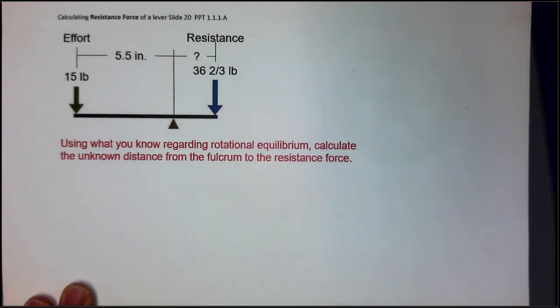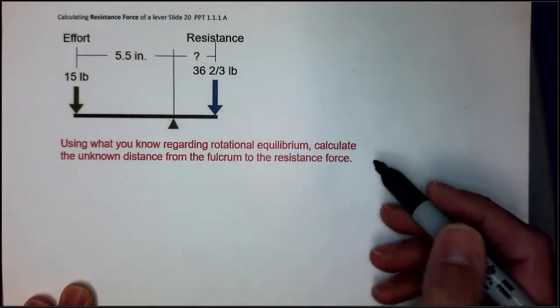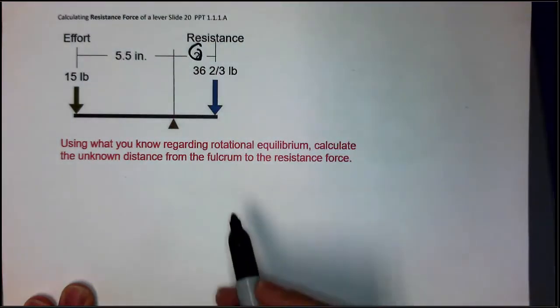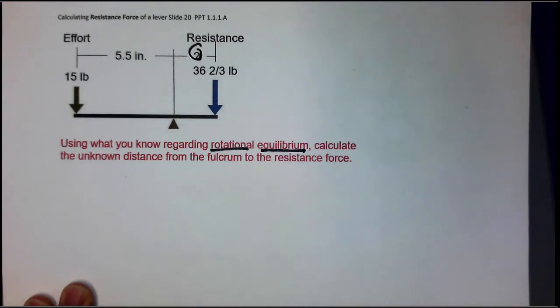It says, using what you know regarding rotational equilibrium, calculate the unknown distance. So we're looking for the resistance distance. And the key is rotational equilibrium.